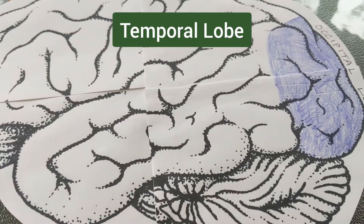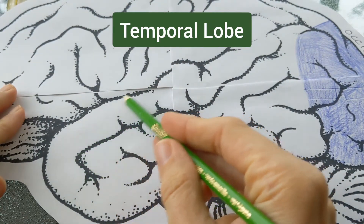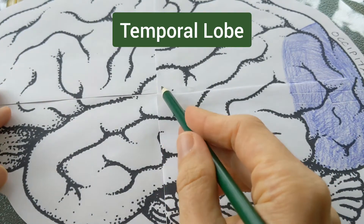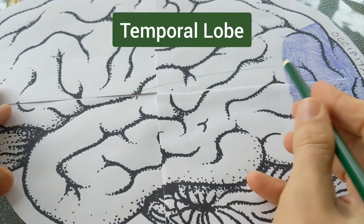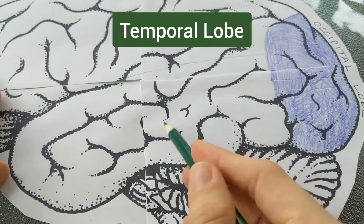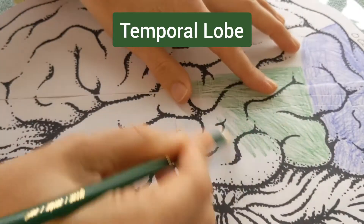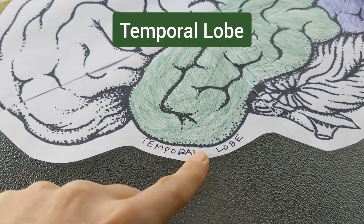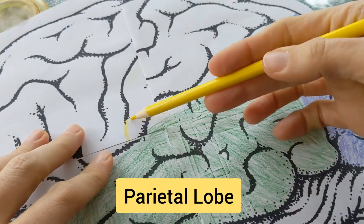Now let's go ahead and do the temporal lobe. I'm going to use green for the temporal lobe, and this is a very nice boundary for it. We'll start along there and then I'm going to show it angling and coming back. The temporal lobe is the part that runs right along where your ear is. So now shade in all of the temporal lobe. I've labeled on the outside this part the temporal lobe, which is green, and we're going to move to the parietal lobe, which I'm going to do in yellow.